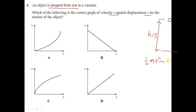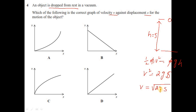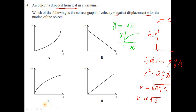Using energy conservation: ½mv² = mgs, so v² = 2gs, and v = √(2gs). Since g is constant, v is directly proportional to √s. Recalling that the graph of y = √x is a curve that increases with decreasing gradient, the velocity-displacement graph has the same shape. The answer is option C.